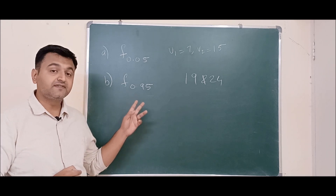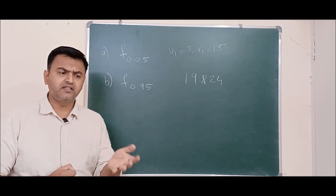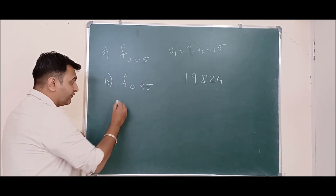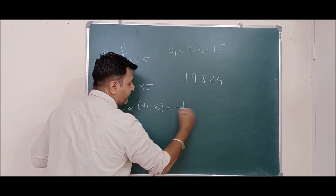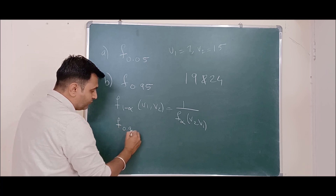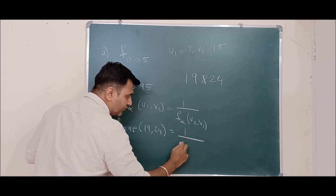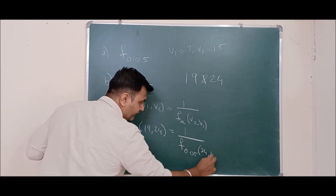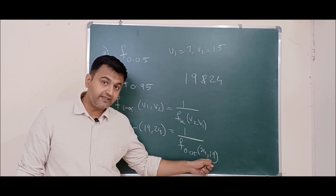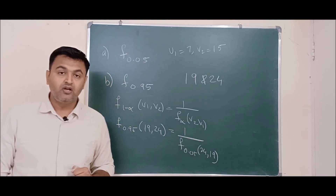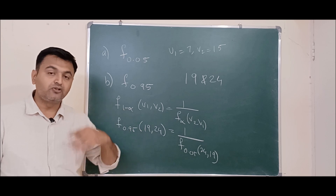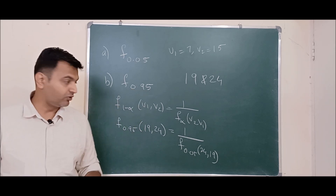Example 2: Find F_0.95(19, 24) — that is, the area towards the right is 0.95. Since the table only gives 0.05 and 0.01, we use the reciprocal theorem. With alpha = 0.05: F_0.95(19, 24) = 1 / F_0.05(24, 19). We look up F_0.05(24, 19) in the table and take its reciprocal. So using this theorem, we can also find answers for alpha = 0.95 and 0.99.